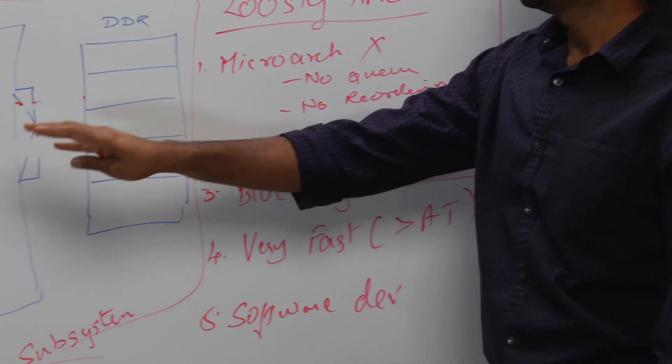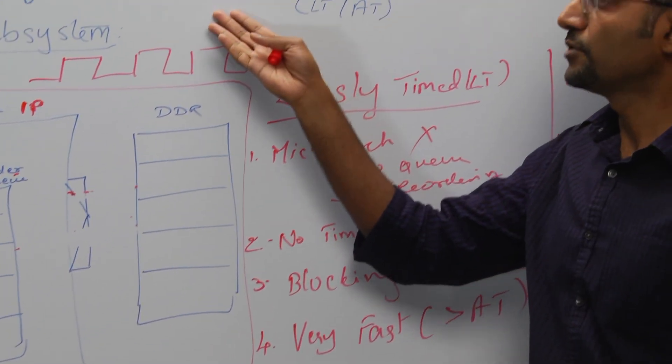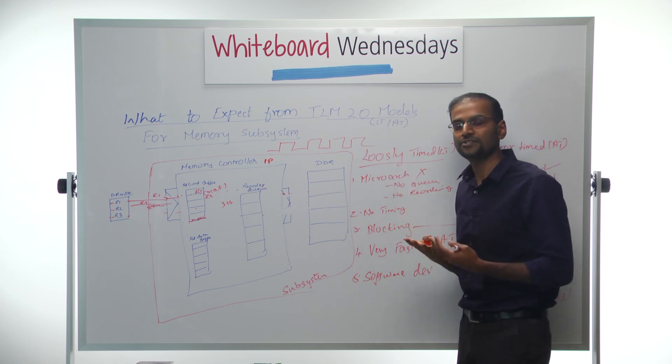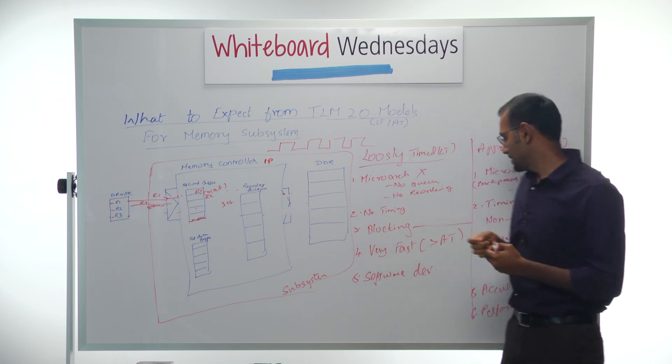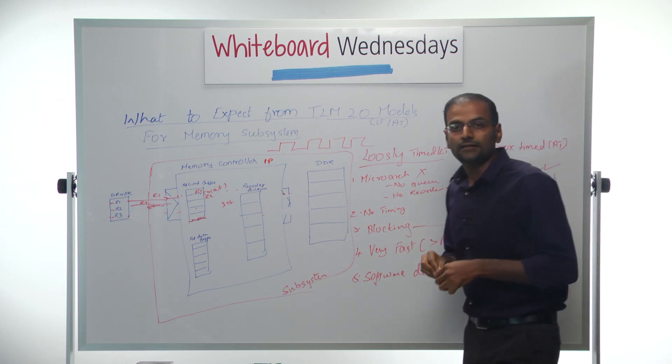Cycle accurate - like I said, I won't call it a cycle accurate model because for it to be cycle accurate it has to be a signal level model, and this is a TLM 2. This is at the level of transaction, it's not the level of signals, so it's beyond the scope of TLM 2. And so that's LT and AT models. Thank you.